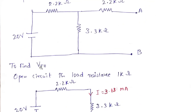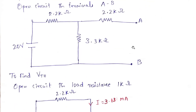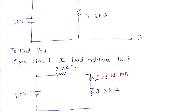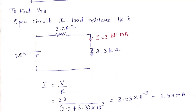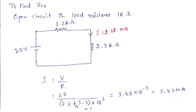Now we need to find the Thevenin voltage VTH. We open the 1 kΩ load resistance, so no current flows in that branch since it is an open circuit. We ignore that resistance and find the current in the remaining circuit. We have 20V with two resistances in series: 2.2 kΩ and 3.3 kΩ. By Ohm's law, I = V/R = 20 / (2.2 + 3.3) × 10³, which gives I = 3.63 × 10⁻³ = 3.63 milliamperes.